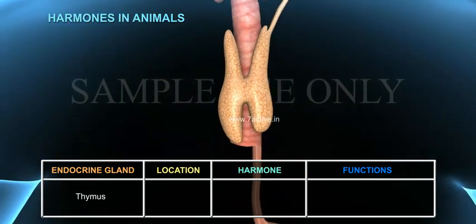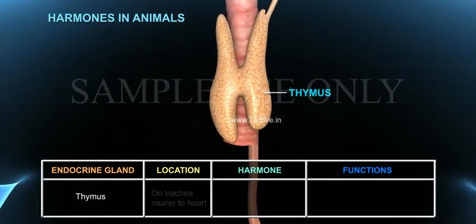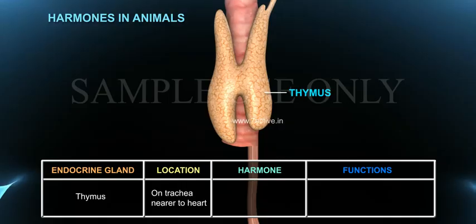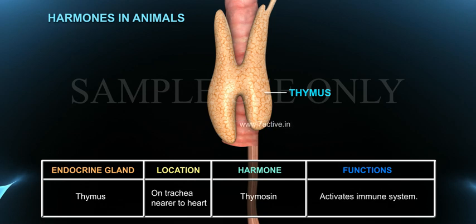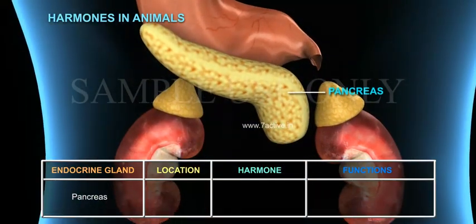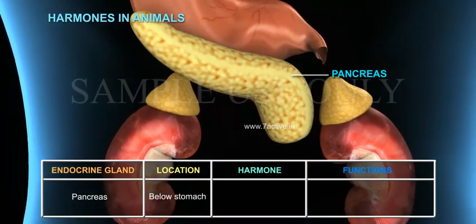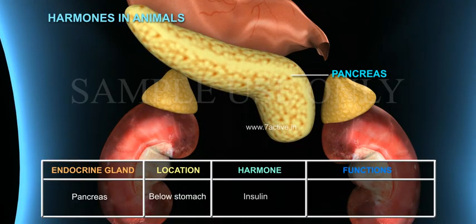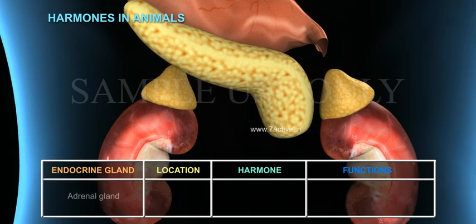The Thymus is located on the trachea, nearer to the heart. Its hormone is thymosin, and its function is to activate the immune system. The Pancreas is located below the stomach. Its hormone is insulin, and its function is to regulate blood sugar levels.